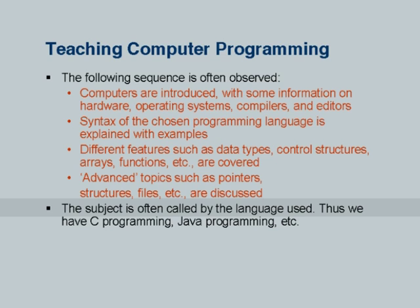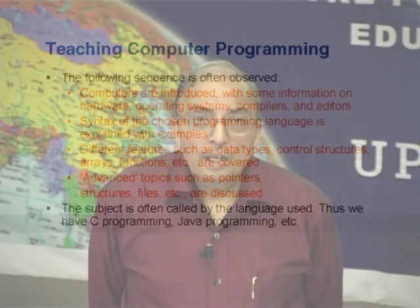This subject often gets referred to by the language used. So, if we have chosen C programming language, students start calling this course as a course in C programming. If we choose Java, students call this Java programming. It is not uncommon to find students, even after they pass out their degree, writing in their curriculum vitae skills: C, C++, Java. I have not seen a single student writing 'competence in programming.'